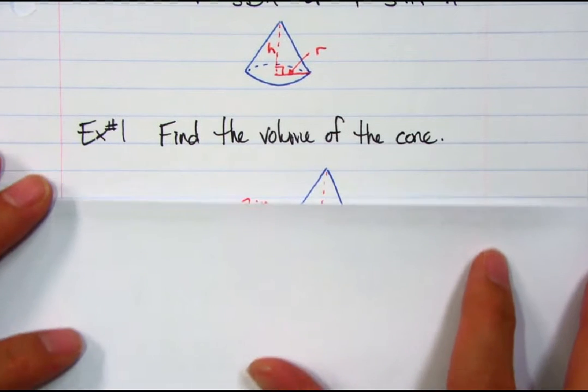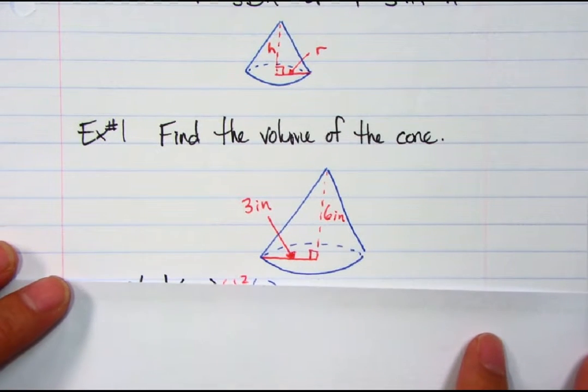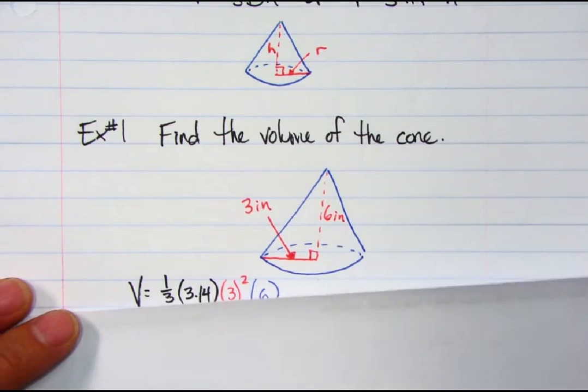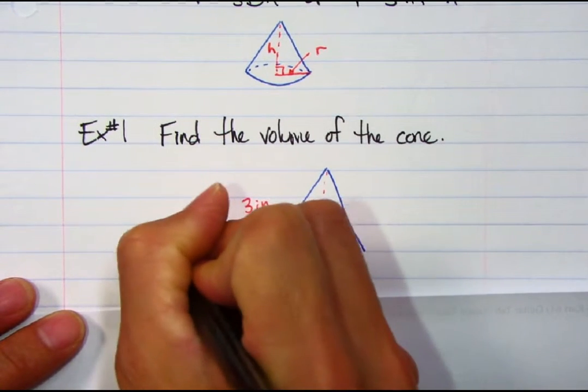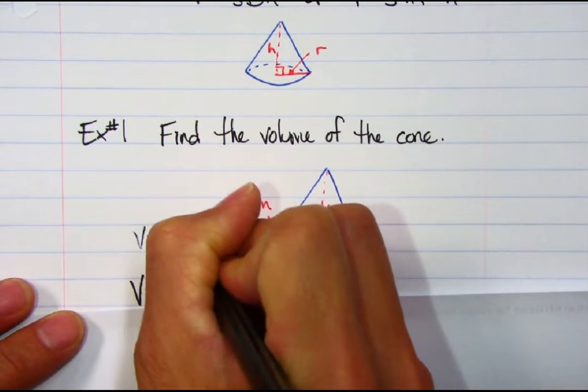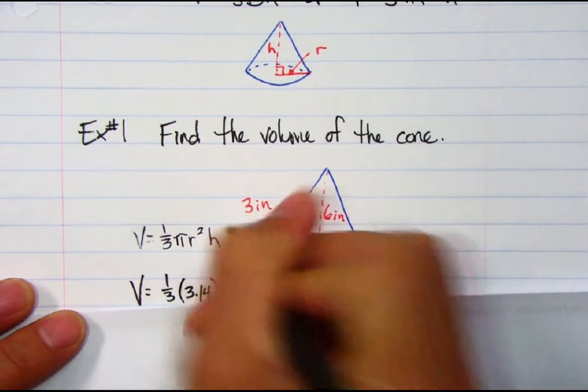So let's find the volume of a cone. Given this information here, we're going to plug this in. So let's recall, volume is equal to one-third the area of the base, that's pi R squared, then times it by the height.